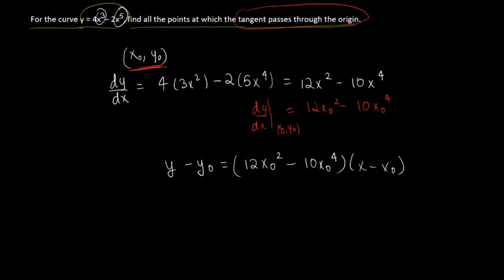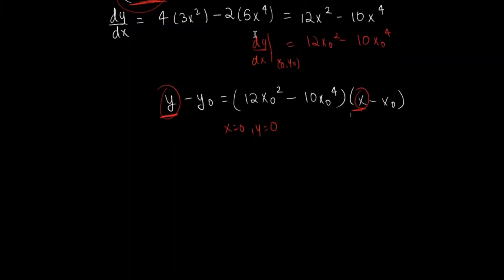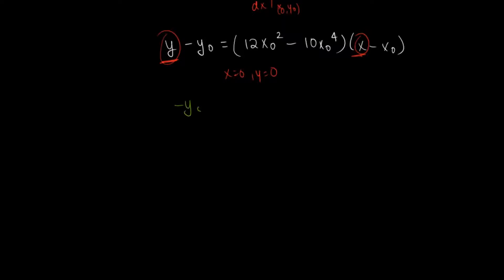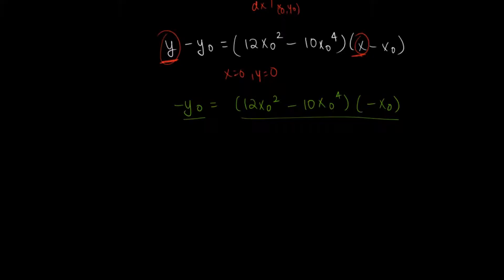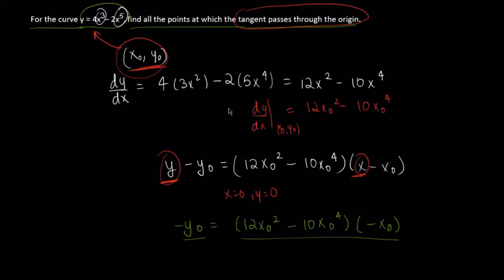Since the tangent passes through the origin, we substitute x = 0 and y = 0 into the tangent equation. We do not set x₀ = 0 because we don't know that yet — we only know the tangent passes through (0, 0). Substituting gives: -y₀ = (12x₀² - 10x₀⁴)(0 - x₀) = -x₀(12x₀² - 10x₀⁴). Since (x₀, y₀) is on the curve, y₀ = 4x₀³ - 2x₀⁵.